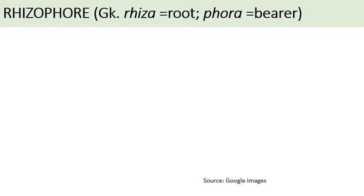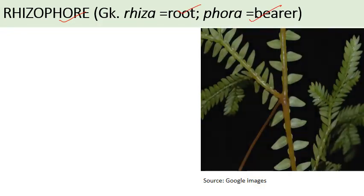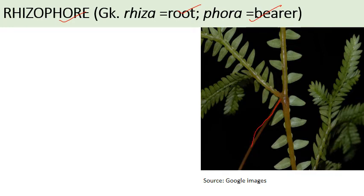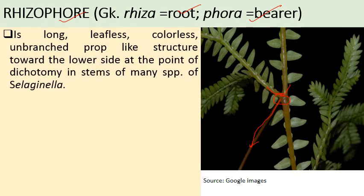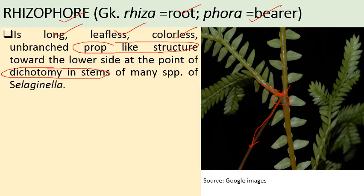The rhizophore is derived from the Greek words rhiza (root) and fora (bearer) — a structure which bears roots. It arises at the point of dichotomy from the angle meristem. It is a long, leafless, colorless, unbranched, prop-like or pillar-like structure arising at the point of stem branching in many Selaginella species. Root caps and root hairs are absent from the rhizophore.